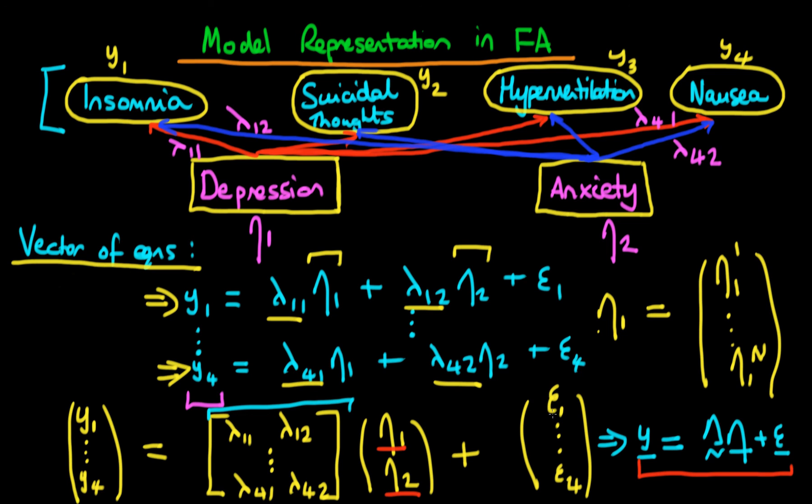I should also say that epsilon 1 through epsilon 4 also unsurprisingly represent vectors of unique disturbance terms which are different for each individual.